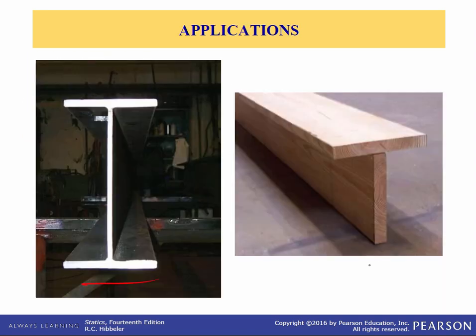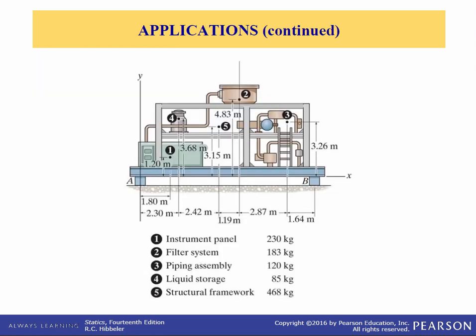This I-beam and this T-beam are commonly used in building various types of structures. When we do a stress or deflection analysis of this beam, which you will do in solid mechanics, we'll need to find the location of the centroid of this composite shape. Here we see a compressor assembled with many individual components. If you're given the weights or the masses and the location of the center of gravity of all those components, how can we find the center of mass or center of gravity of this entire compressor? We need to know that to design the ground support reactions at A and B.